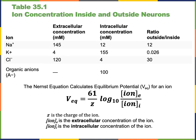The equilibrium potential for an ion is the value of the membrane potential when there is no net flow of that ion into or out of the cell, because the electromotive force is equal and opposite to the force of diffusion. The Nernst equation can be used to calculate the equilibrium potential for an ion. It has three variables: Z, the charge of the ion (sodium and potassium have a +1 charge, whereas chloride has a -1 charge), plus the extracellular and intracellular concentrations of the ion.